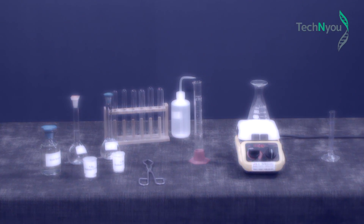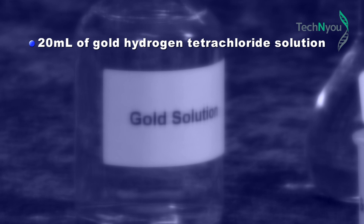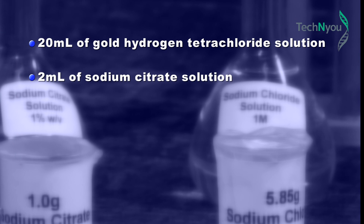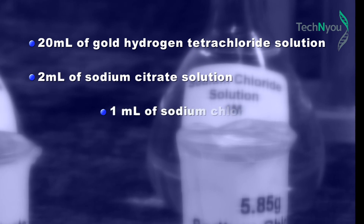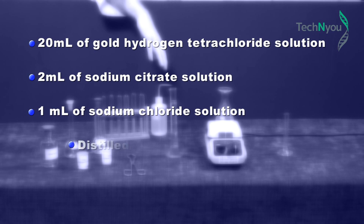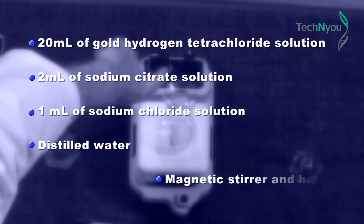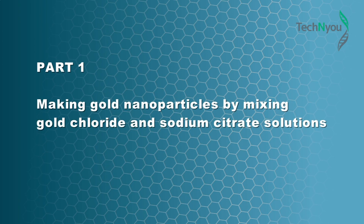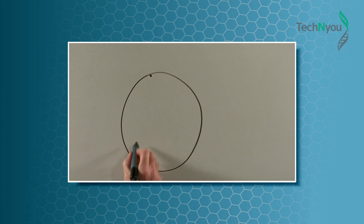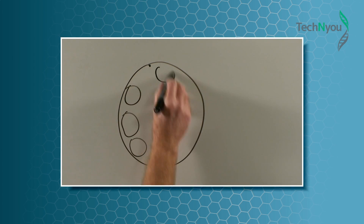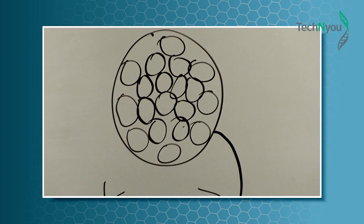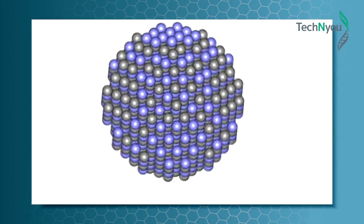The solutions and equipment are: 20 ml of gold hydrogen tetrachloride solution, 2 ml of sodium citrate solution, 1 ml of sodium chloride solution, distilled water, and a magnetic stirrer and hotplate combination. A nanoparticle has a diameter of 10 to 100 nanometres and is made up of a cluster of atoms.